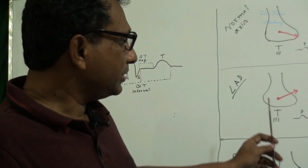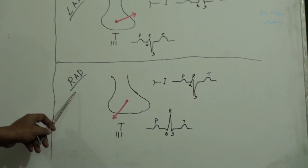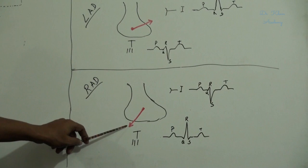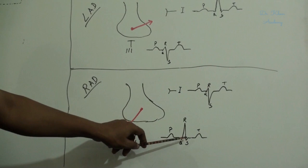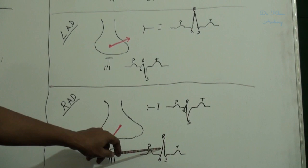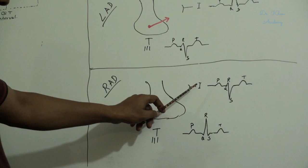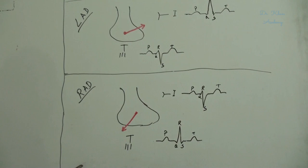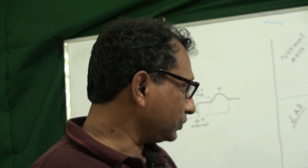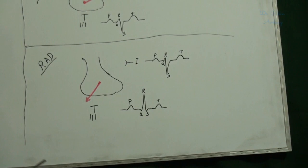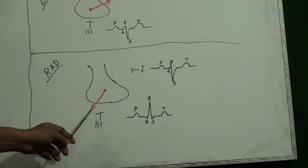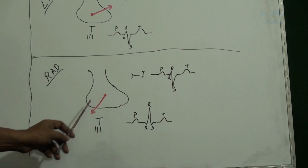In right axis deviation, this vector is oriented to the right side. The impulse passes towards lead 3, so lead 3 shows a positive QRS complex with a taller R wave. The impulse passes away from lead 1, so lead 1 shows a negative QRS complex. So when an ECG shows lead 1 with a negative QRS complex and lead 3 with a positive QRS complex, it indicates right axis deviation. Right axis deviation is usually found in right ventricular hypertrophy, left posterior hemiblock, or it may be a normal variant.